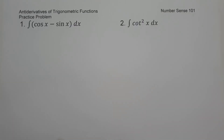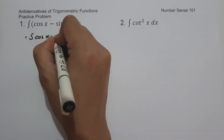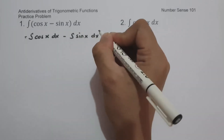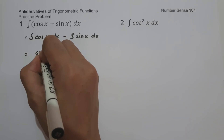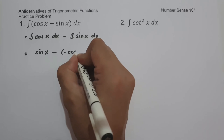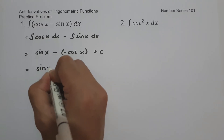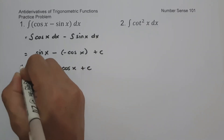On the first example, what is the antiderivative of cosine x minus sine x dx? To simplify this one, let us have the antiderivative of cosine x dx minus the antiderivative of sine x dx. The antiderivative of cosine x dx is sine x, minus the antiderivative of sine x dx, that is negative cosine x plus c. To simplify, this will be sine x — negative times negative, that's positive — cosine x plus c. And this will be our answer.